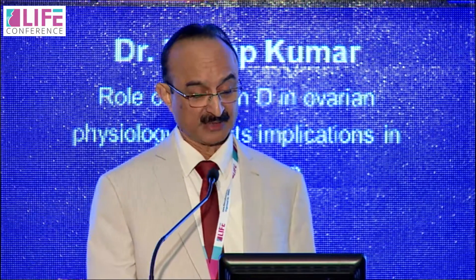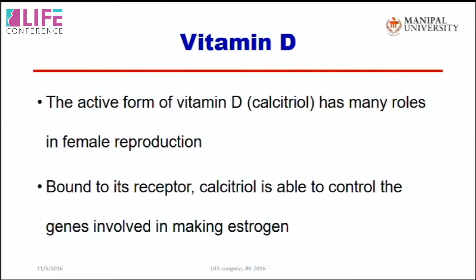Vitamin D also has a role in obstetrics, including in the placenta, recurrent pregnancy losses, and pre-eclampsia. Understanding vitamin D is important because the active form, calcitriol, has many roles in reproduction for both women and men. Bound to the receptor, it controls certain genes in the granulosa cells and follicle, ultimately producing estrogen and playing a role in folliculogenesis.